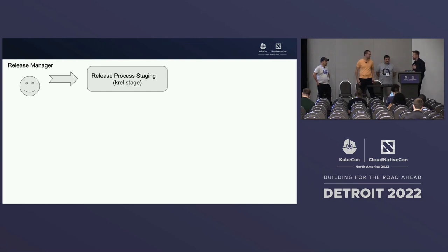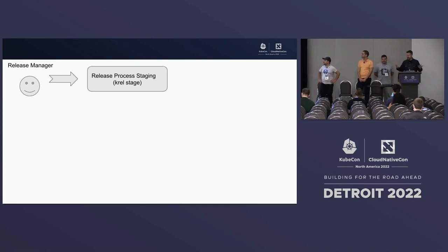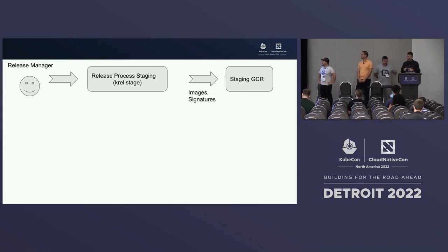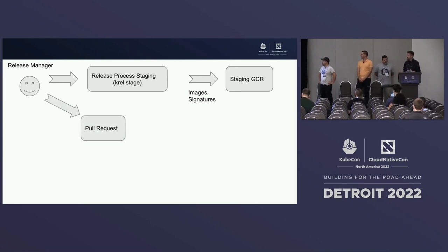As Sasha mentioned, during the release process we stage things and produce a set of images and binaries in the staging environment. We sign them and publish images and signatures to a staging GCR — that's where we can verify things before they go to production. Then, as Sasha mentioned, k-promo generates a pull request listing all images that need to be promoted from staging to a real release. The first stage of trust comes from having a small trusted set of people able to generate these releases, who then create that PR for review of what will be promoted.